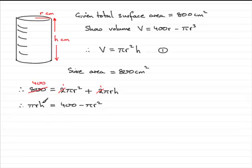And now I can divide through by pi r on both sides, and we get h equals 400 minus pi r squared, all divided by pi r.